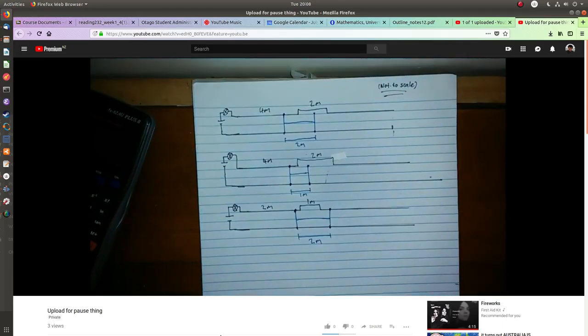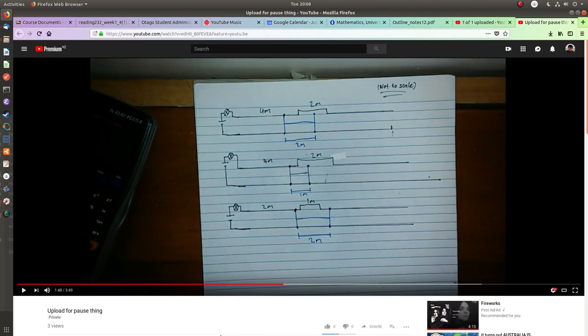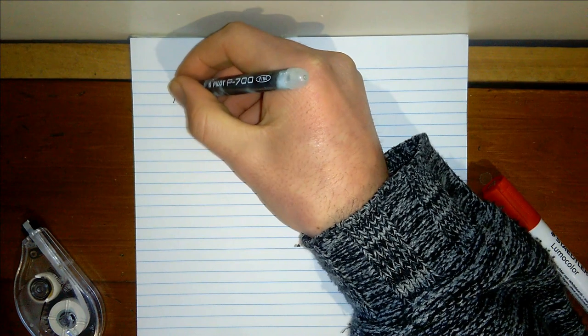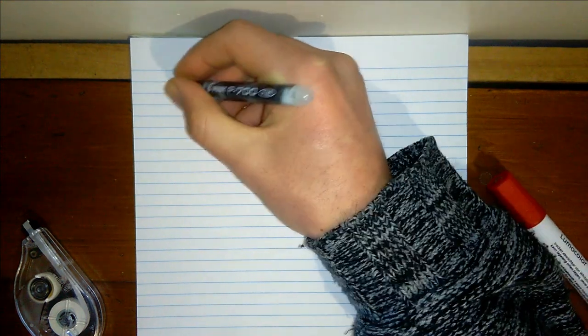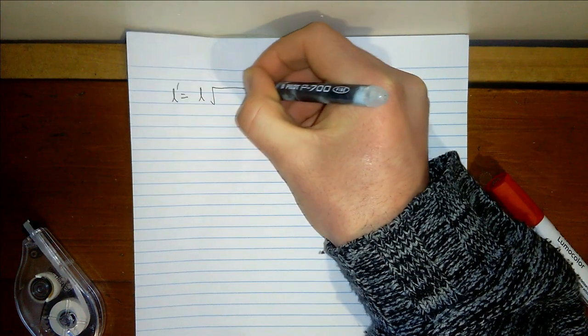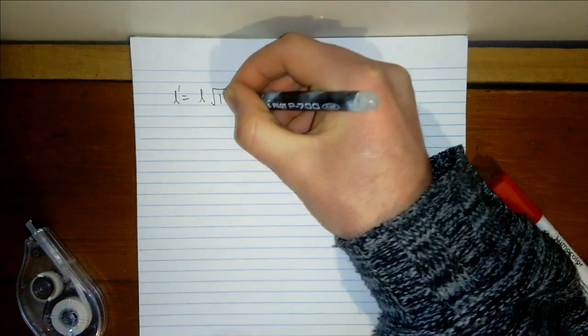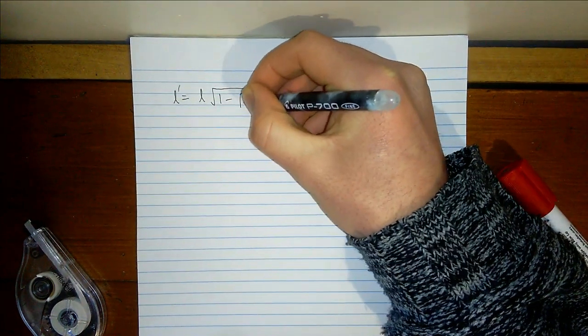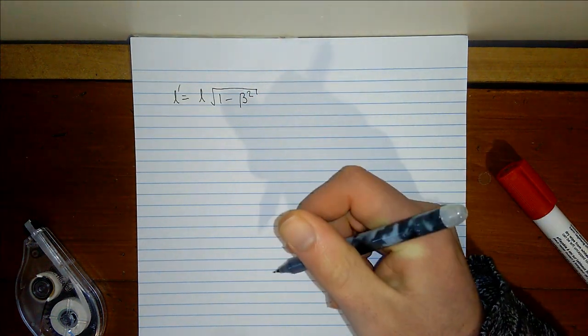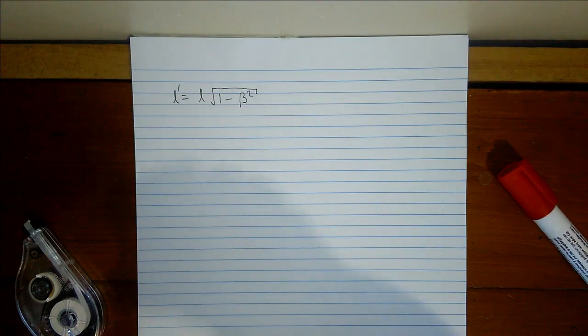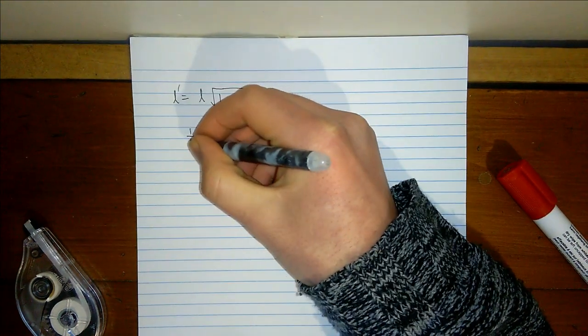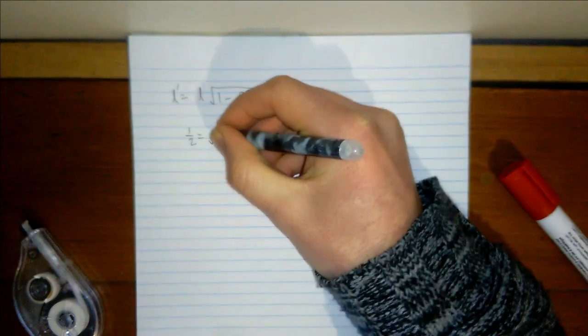Pause the video here if you want to solve it yourself. So, without further ado, here's the solution. Firstly, let's figure out how fast the carriage is going for its length to be contracted by a half. This is done by this equation, where beta is the fraction of c that the object is going. So, solving for beta, we get beta equals the square root of 3 over 4, which is approximately 0.866.